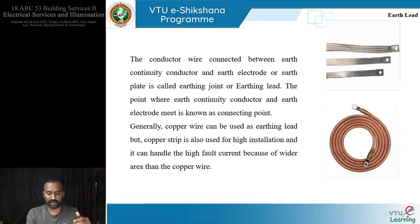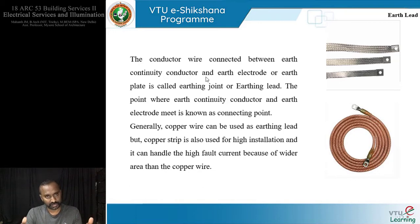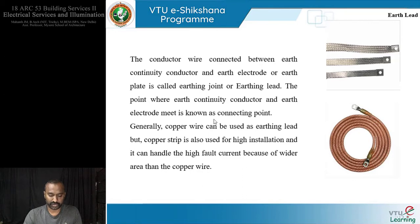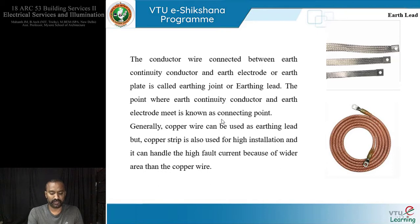The second component is the earthing lead. The earth wire comes and stops at a particular point, and then the earthing lead continues from there. The earthing lead is the conductor wire connected between the earth continuity conductor and the earth electrode. The point where the earth continuity conductor and earth electrode meet is called the connecting point. Generally, copper wire is used as an earthing lead, but copper strips can also be used because they handle high fault current better due to their wider area.